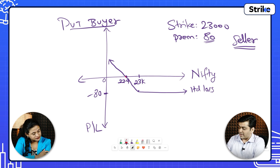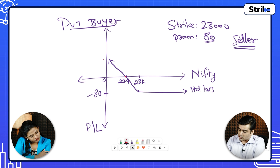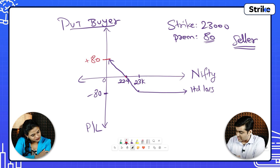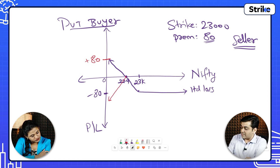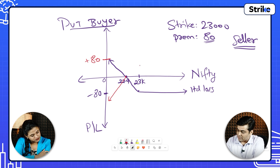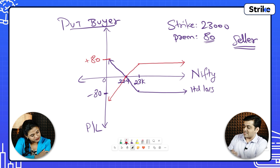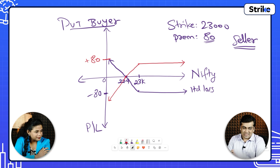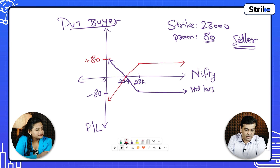If Nifty goes up, the profits for the put option seller will also be limited up to 80 rupees only, but there will be unlimited downside. If Nifty falls below 22,900, the downside will be unlimited. The upside is capped — exactly the mirror image of a put option seller. Let's see this quickly on the platform.